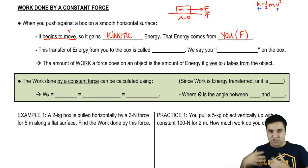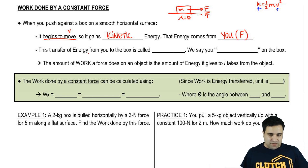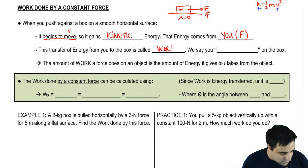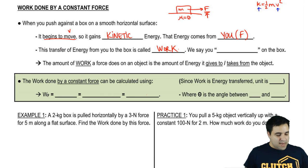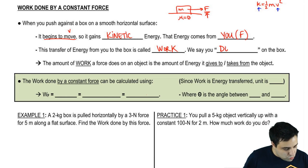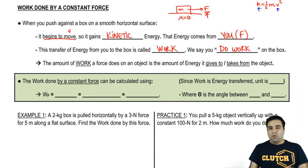This transfer of energy, you transferred your stored energy into the box, into the form of kinetic energy. This transfer of energy from you to the box is called work. So in physics, that's what work means. And we say that you do work on the box. So doing work on an object is transferring energy into that object.